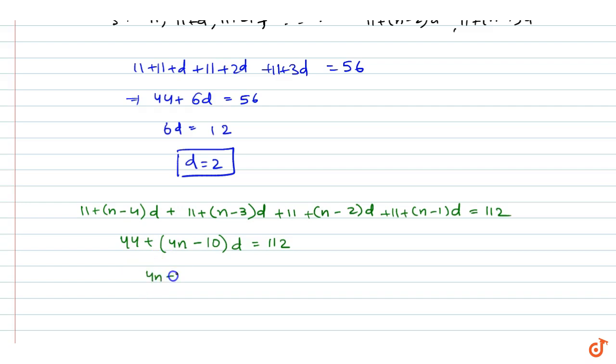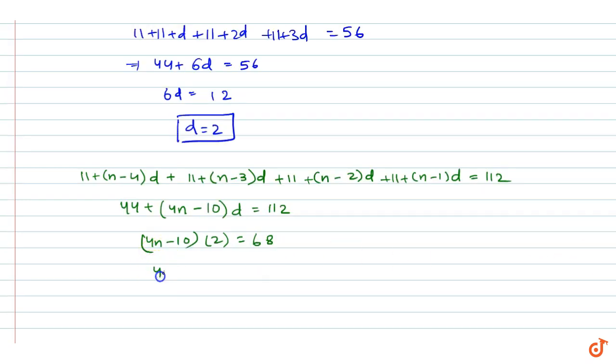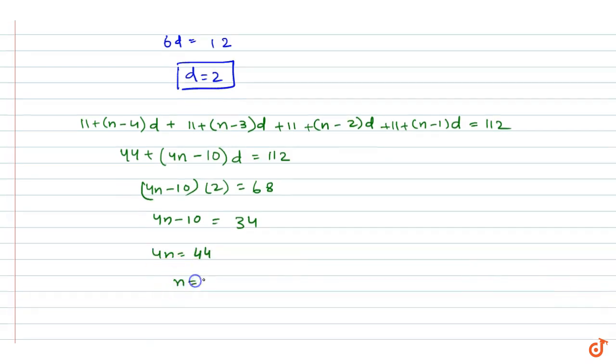This gives us 44 + 4(n-10)(2) = 112, which becomes 44 + (4n-10)(2) = 112. This simplifies to (4n-10)(2) = 68, so 4n-10 = 34, therefore 4n = 44 and n = 11. The number of terms in the AP series is n equals 11. This is our answer.